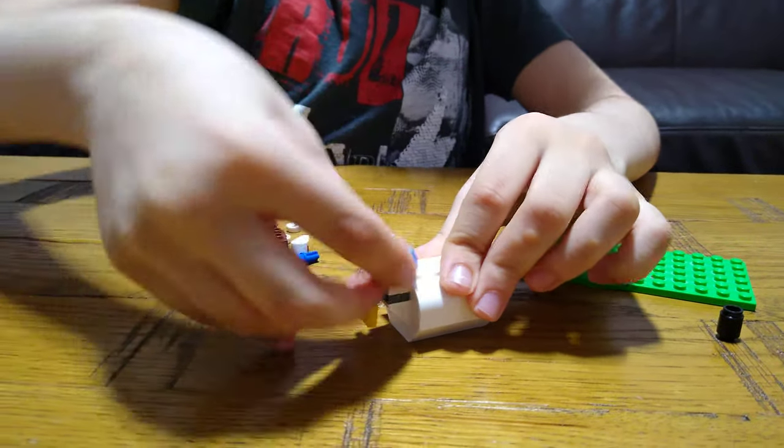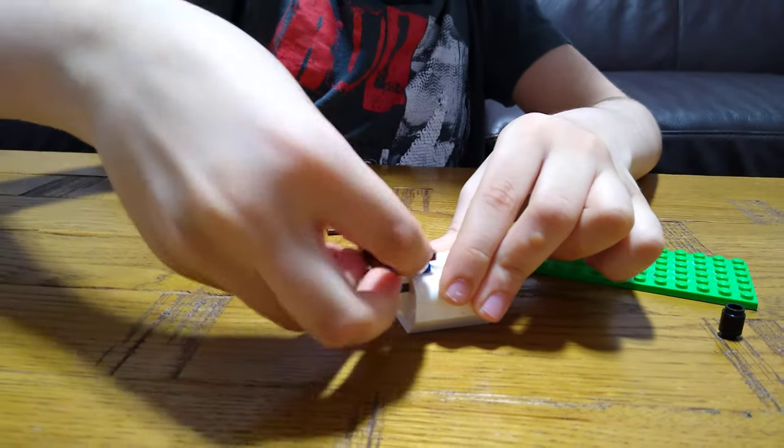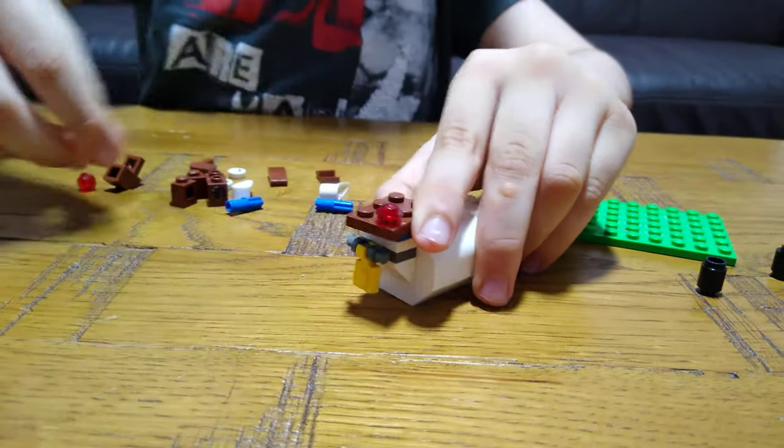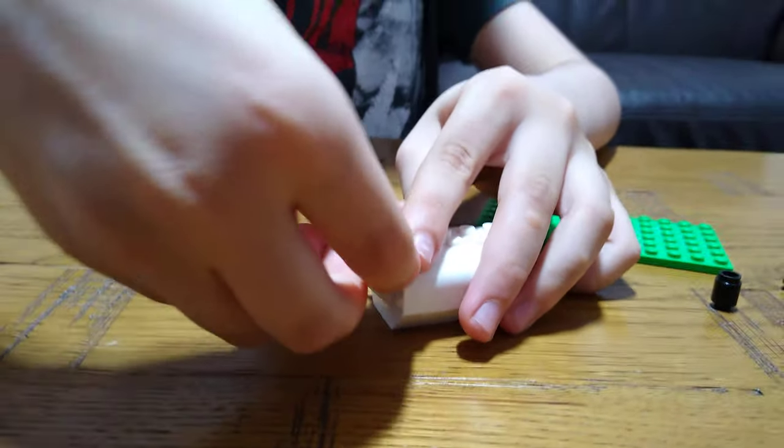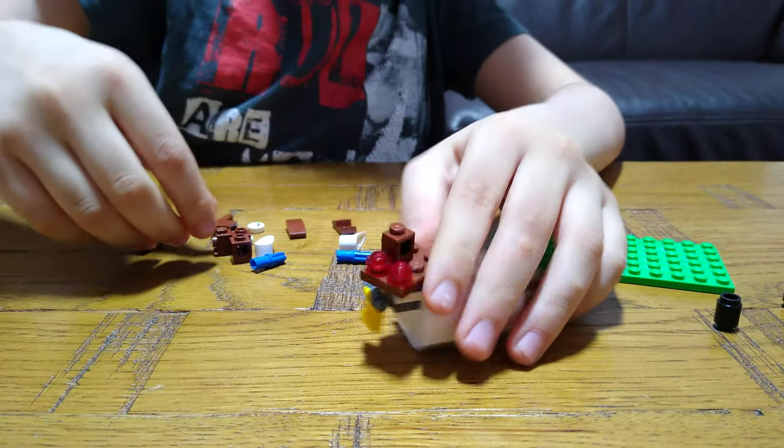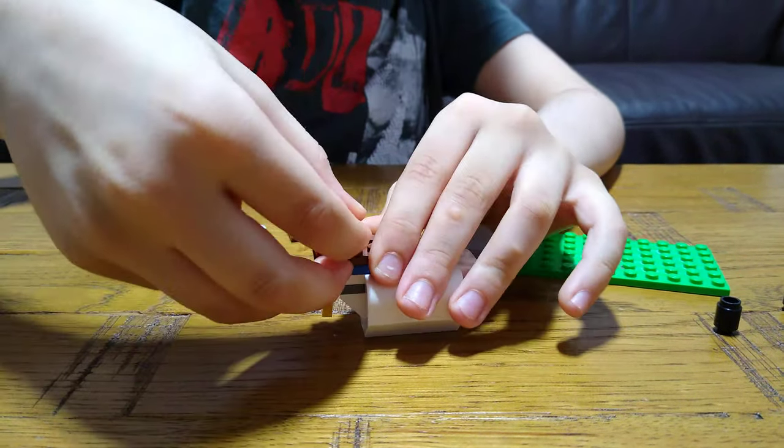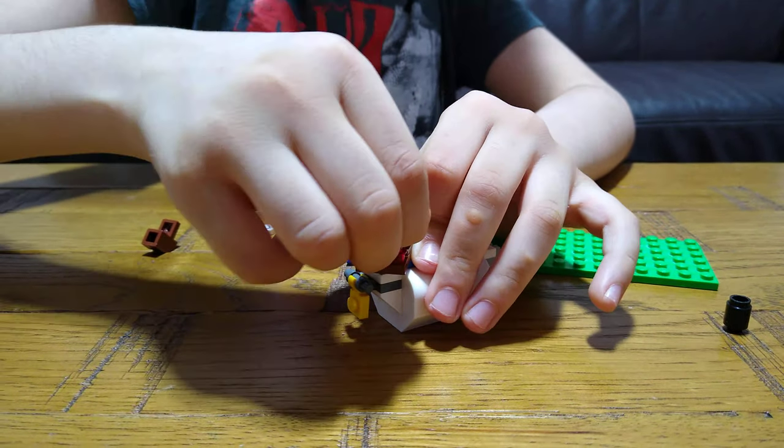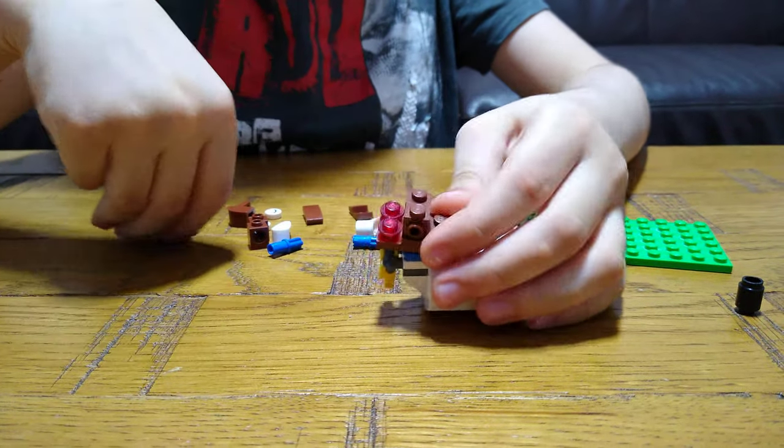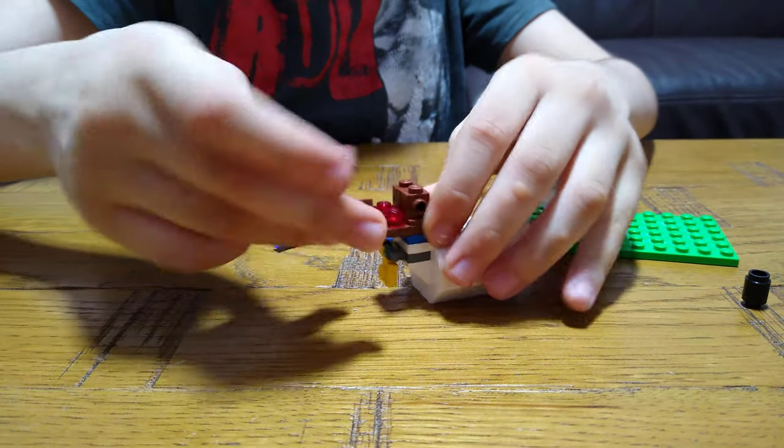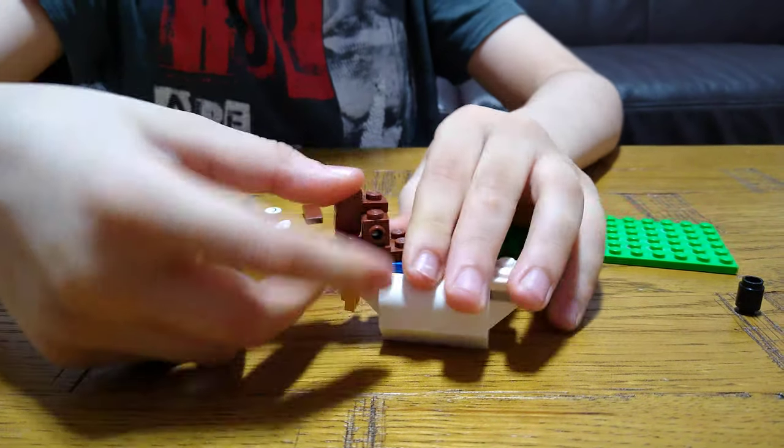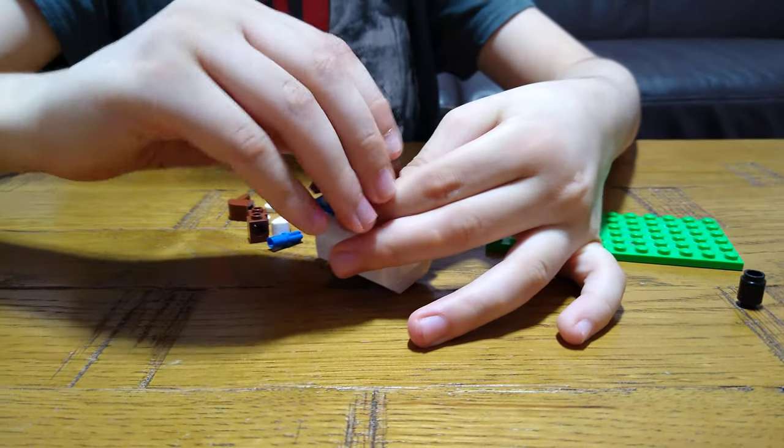So then we're going to get this blue piece on and then this and then these two studs on. And then these two. Put it on both sides. Basically for like the eyes. The red are like teeth but it could have at least been a white or something.